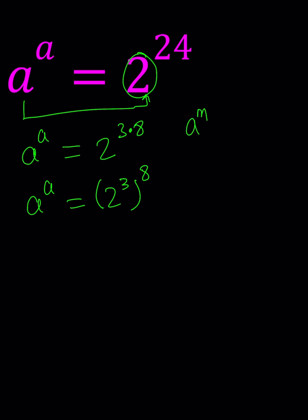Well, we have a nice property of exponents that says this, so we can also use it backwards. Now 2 to the third power is 8, so a to the a becomes 8 to the 8. You get the idea?